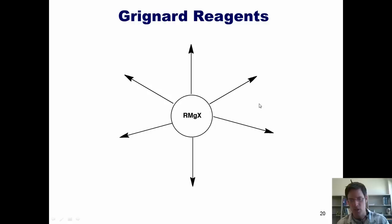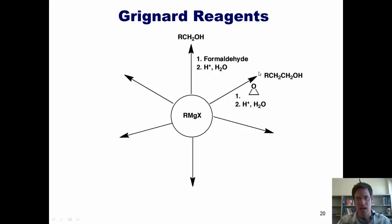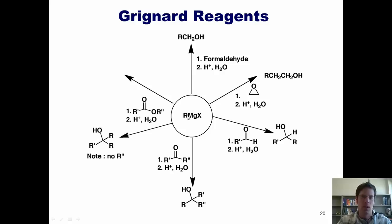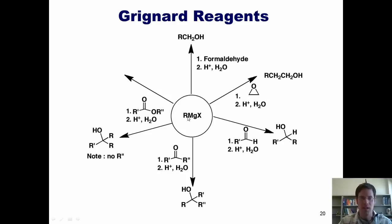This slide shows how Grignard reagents can be used with lots of different compounds. Treating formaldehyde—the simplest aldehyde—with a Grignard reagent generates a primary alcohol after quench. Taking a Grignard to an epoxide and quenching gives an extended primary alcohol. A Grignard added to an aldehyde gives a secondary alcohol; added to a ketone gives a tertiary alcohol. Importantly, a Grignard added to an ester actually adds in twice—the Grignard adds once, the OR group is kicked off, then a second R-minus comes in, ultimately arriving at a tertiary alcohol. The same applies to acid chlorides. You cannot hit an ester only once with a Grignard reagent.